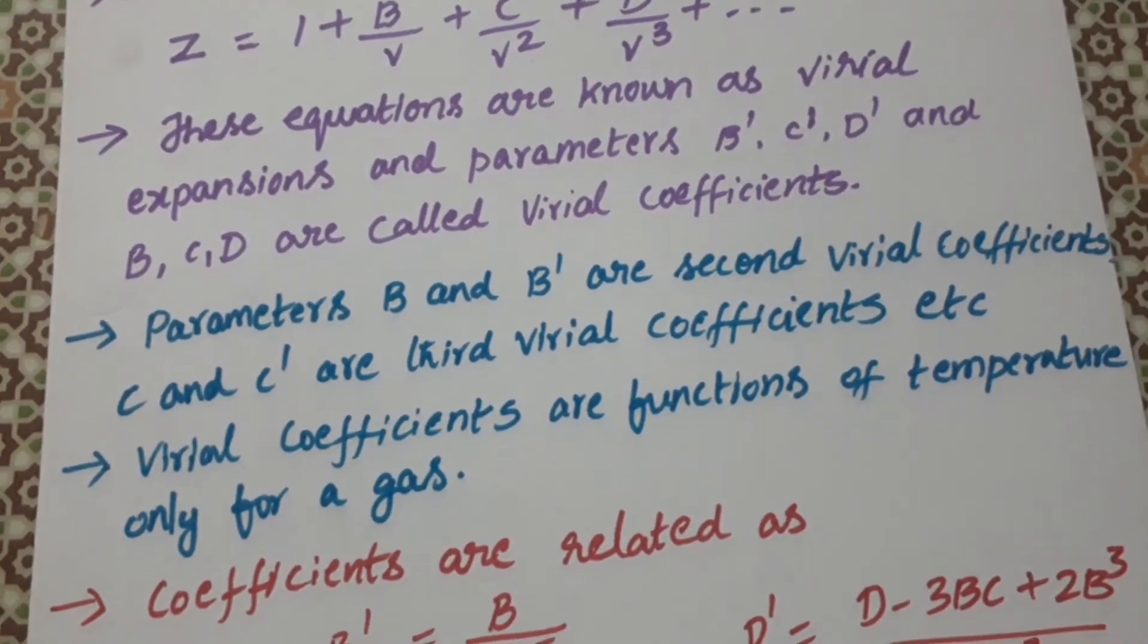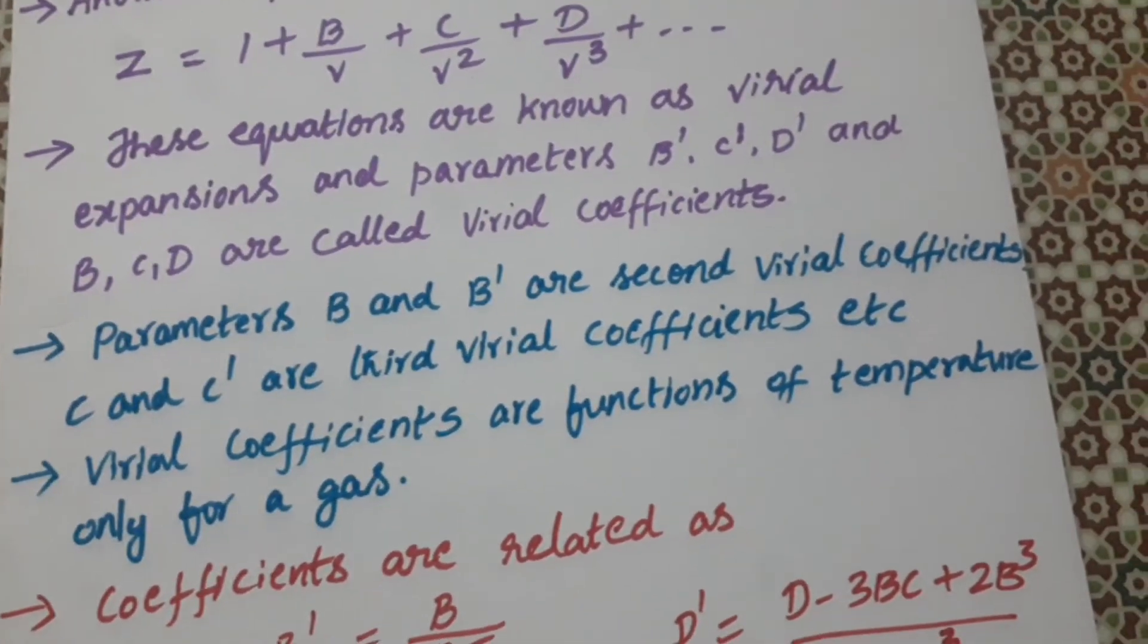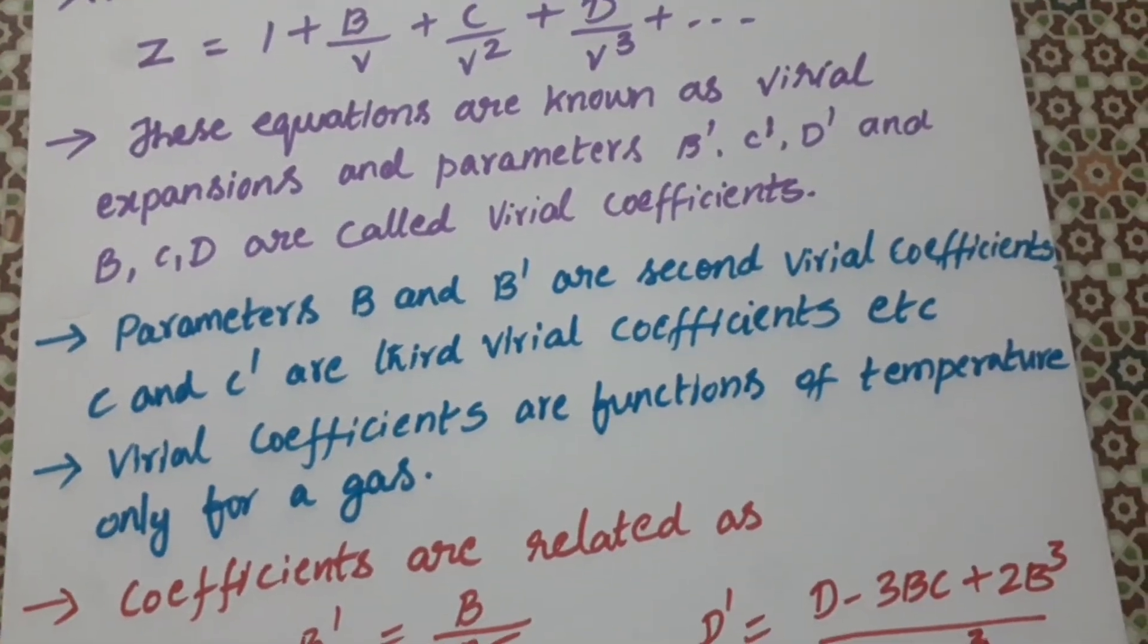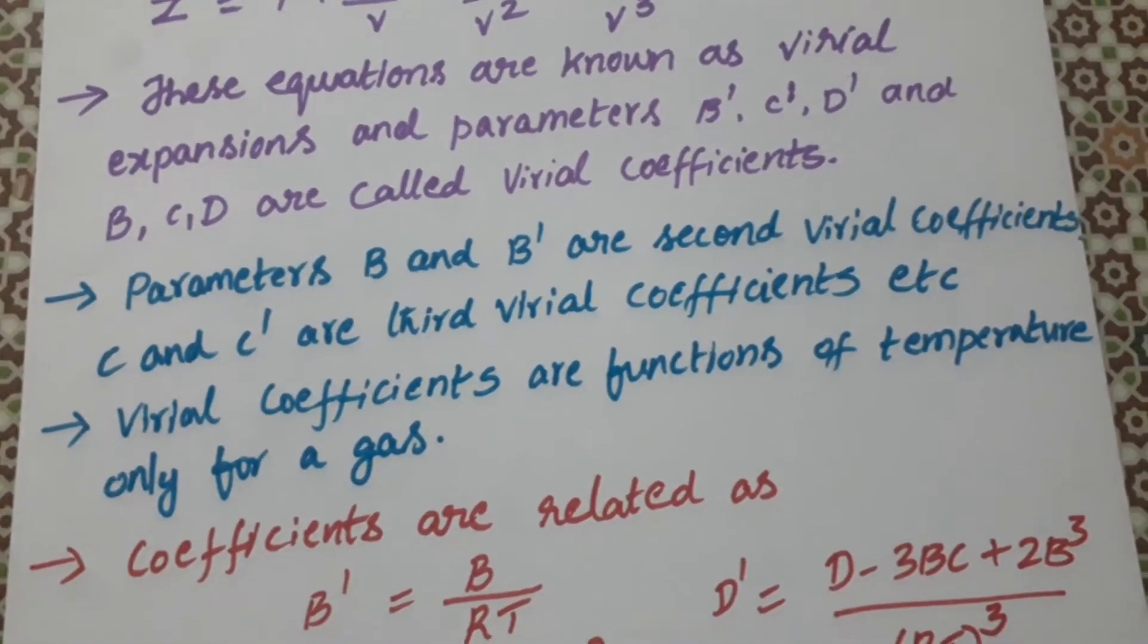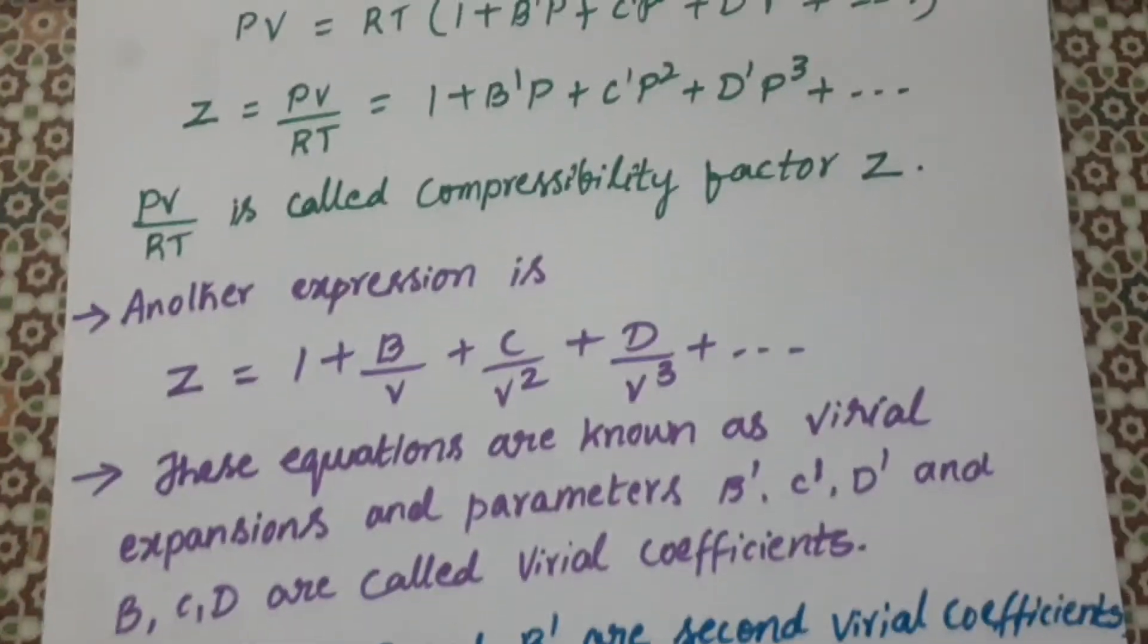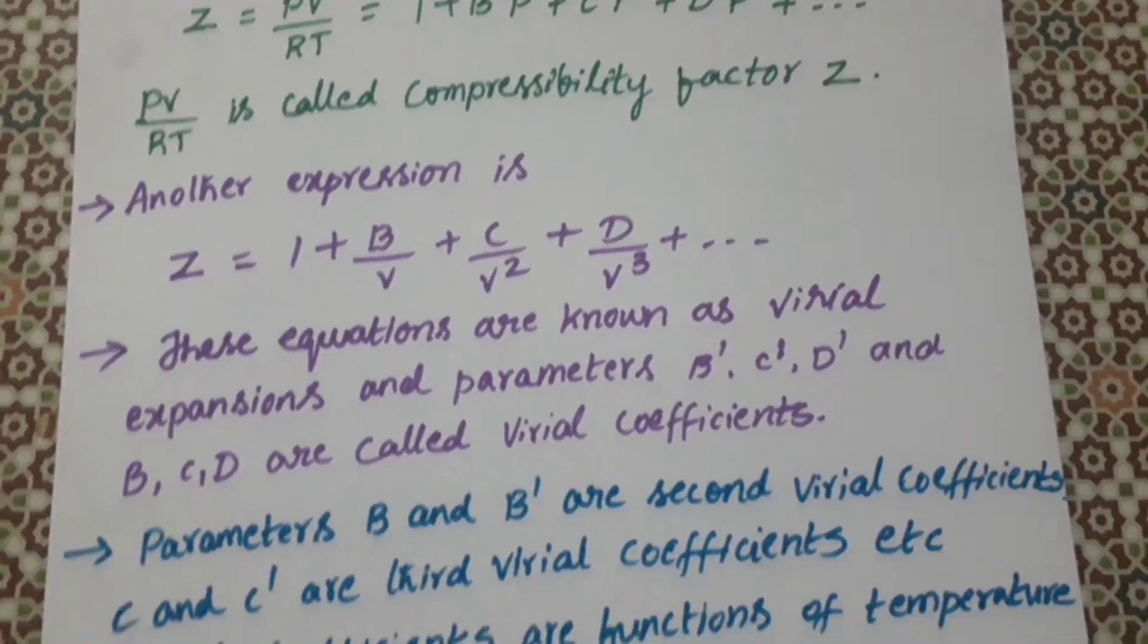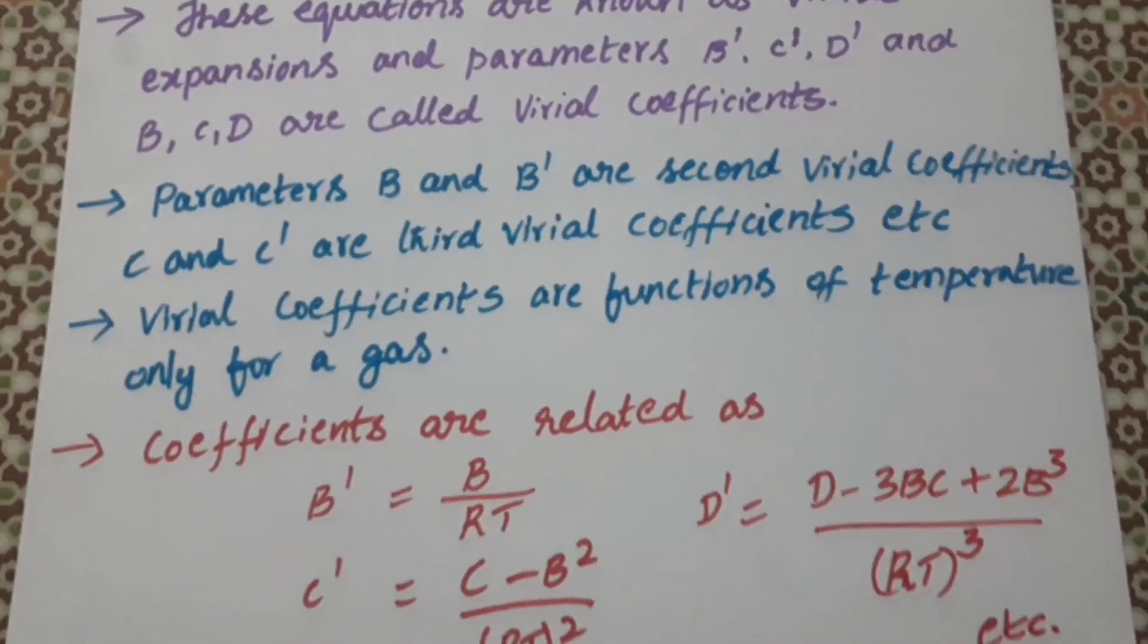So these virial coefficients are functions of temperature only. So it will be representing as a function of temperature for a gas. So we can relate these two coefficients, that is B, B', C'.